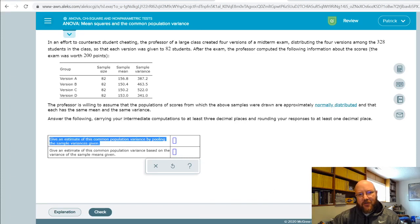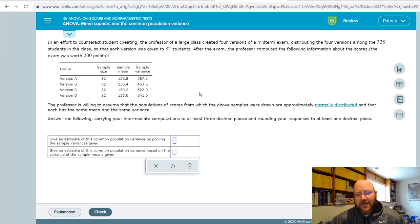Hey folks, it's Pat here. I've got a Chapter 12 question I want to cover real quick: ANOVA mean squares and the common population variance. This is the question where a lot of people start getting jammed up.